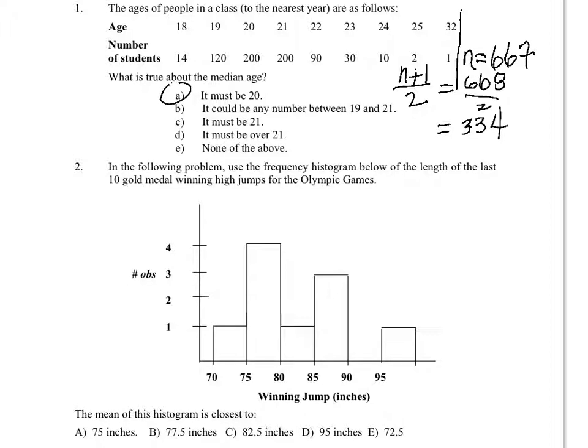If you're feeling uneasy about this problem, remember the data is in order. It's been sorted out. And what you really have is 14 18s followed by 120 19s followed by 200 20s, etc. So we're just counting through and arriving at the 334th observation right here, age 20.